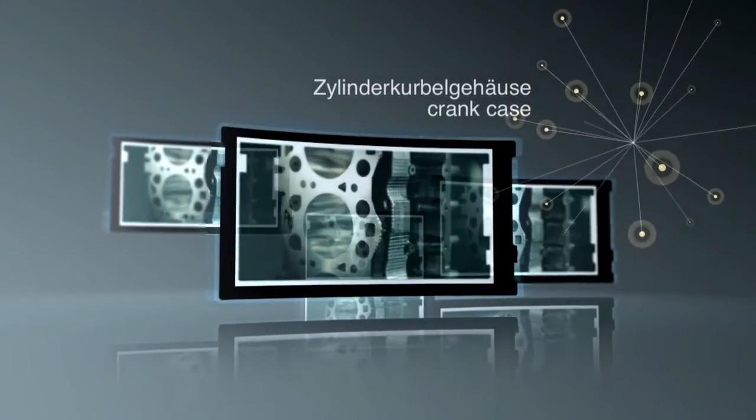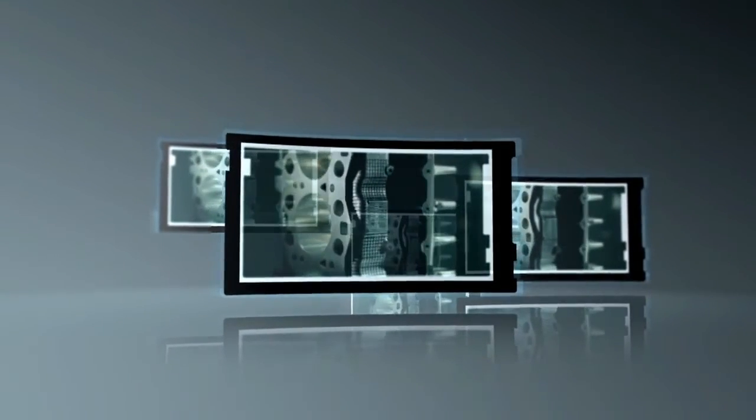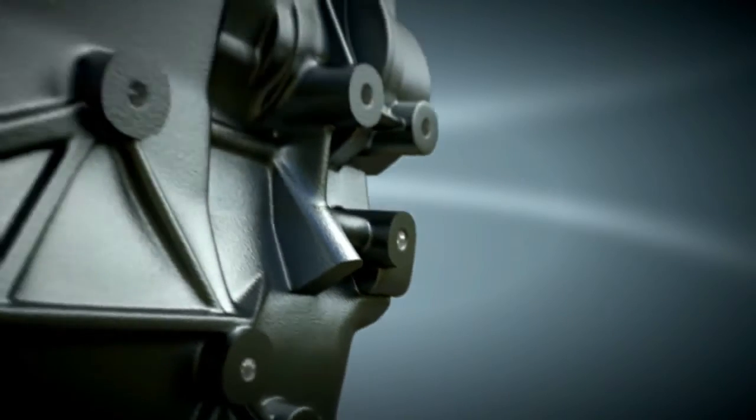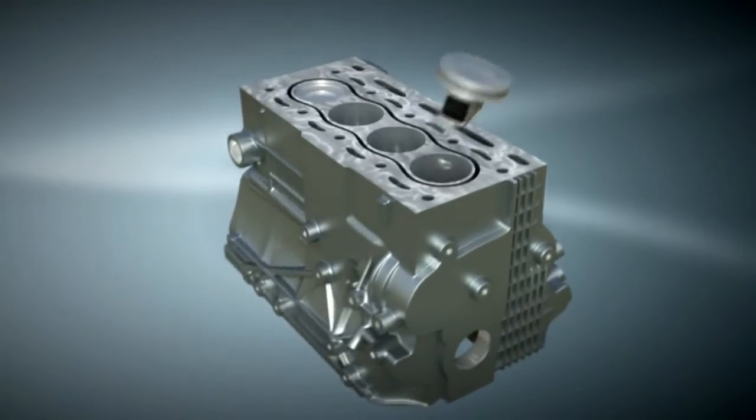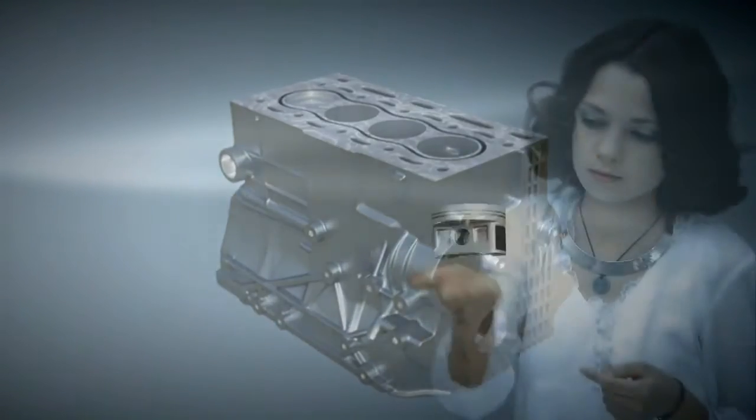The engine of the future has to be lightweight. Thanks to modern light metal casting methods, we can save about 20 kilograms. New coating methods provide for a very smooth and long-wearing cylinder wall.